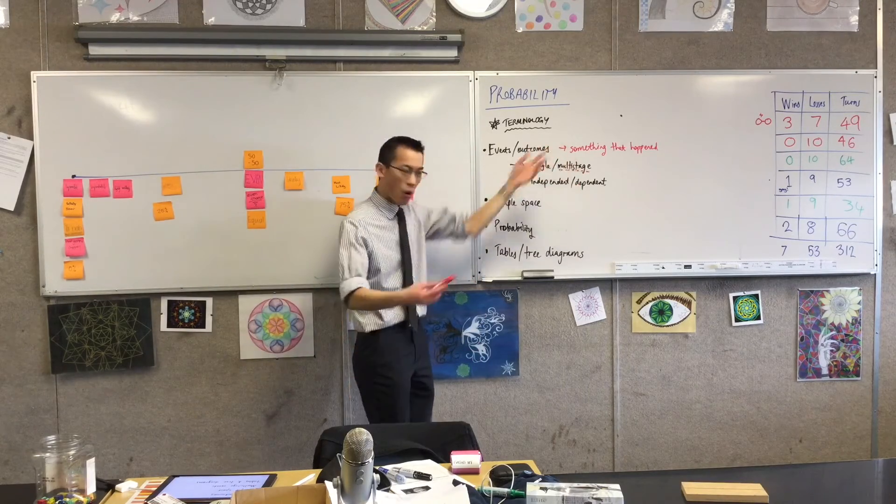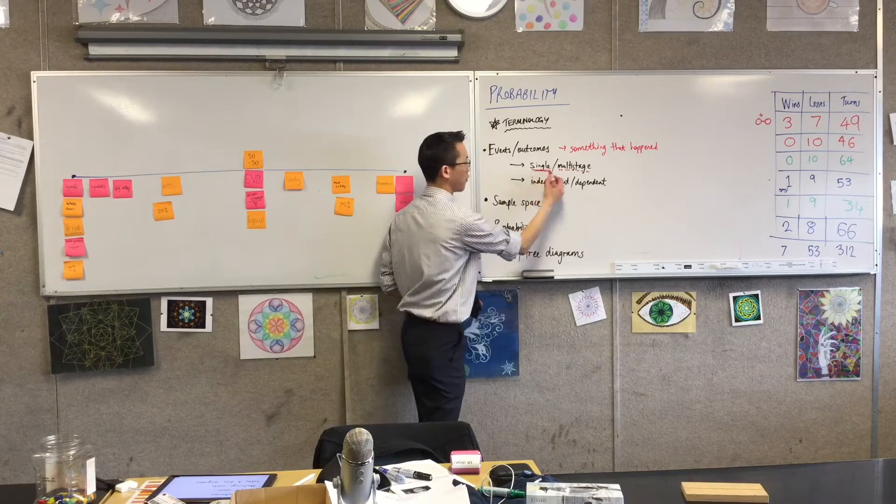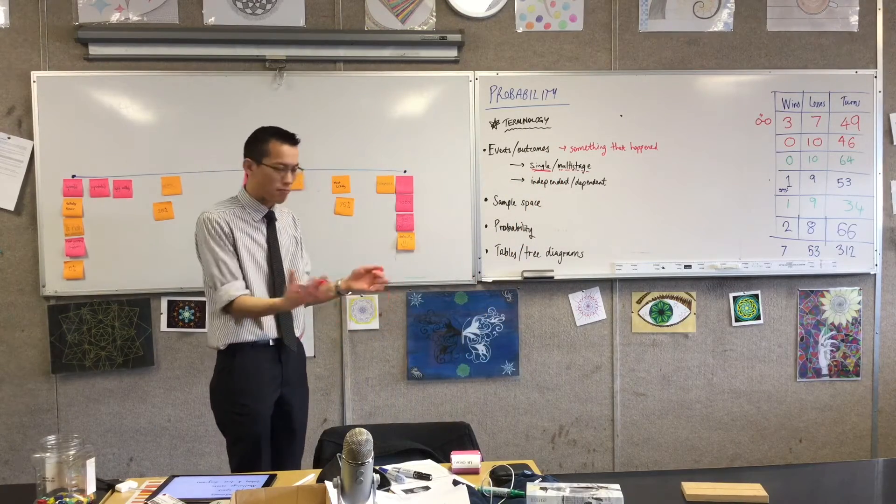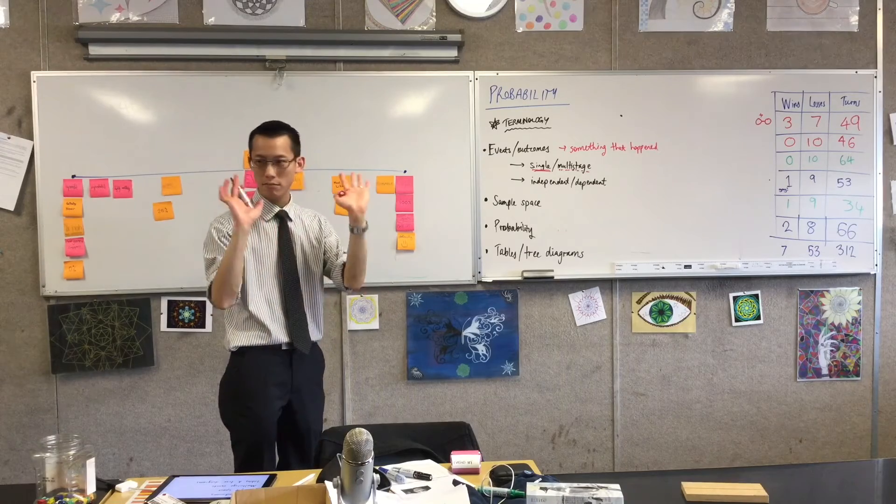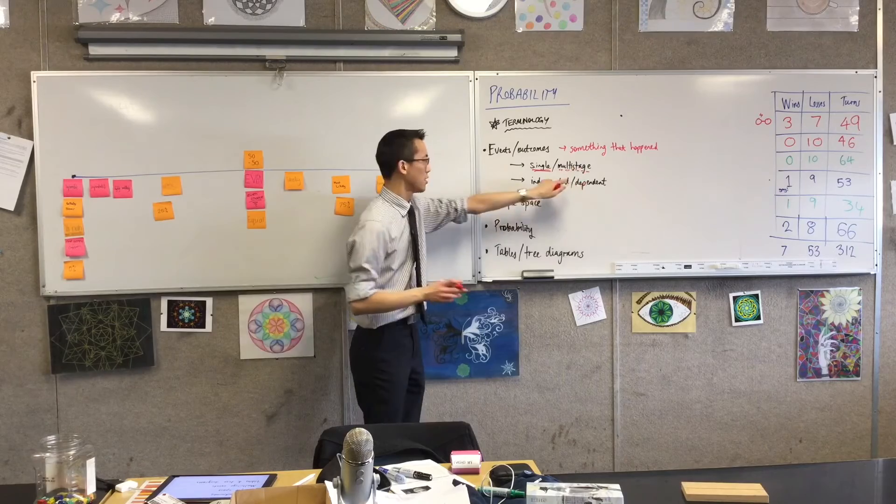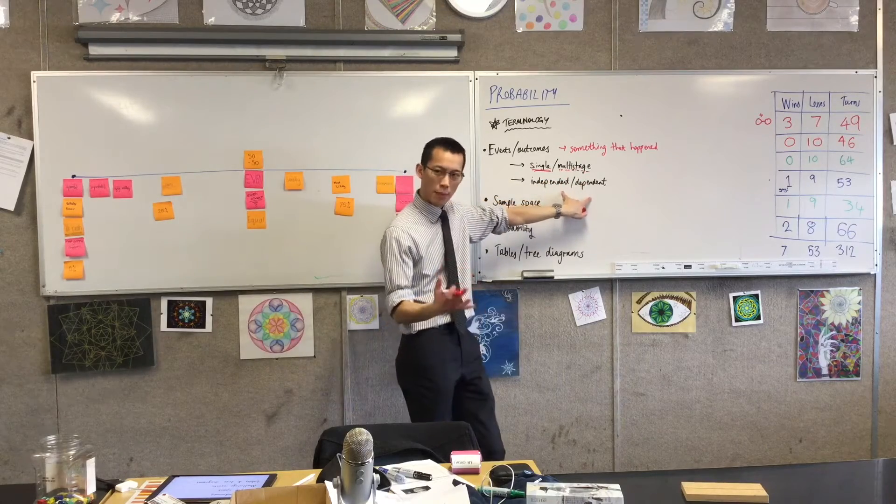Or you could have one I mentioned before, like rolling a three - that's a single event. There's nothing else that affects it, it's just done, one single thing. So events can be single or multi-stage. In addition, they can be independent or dependent.